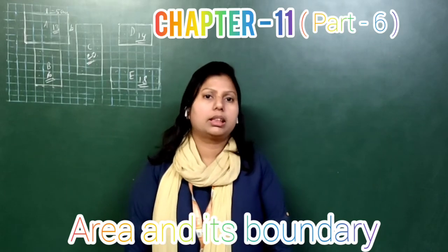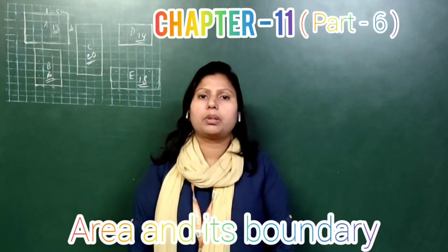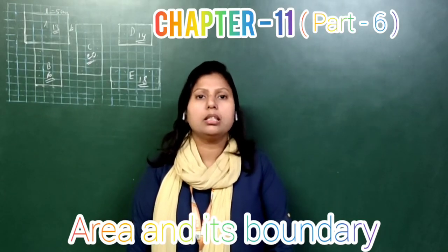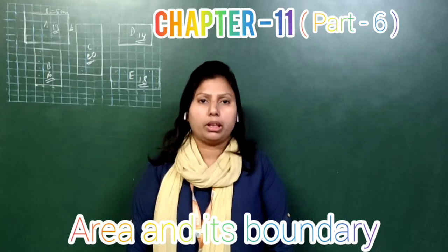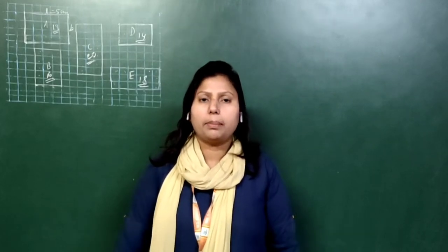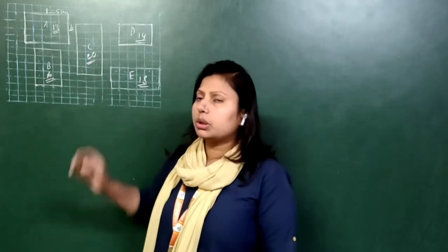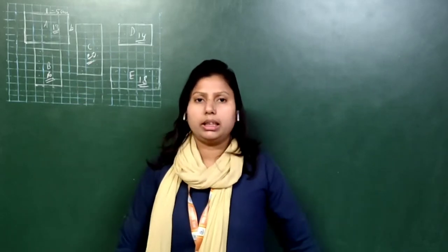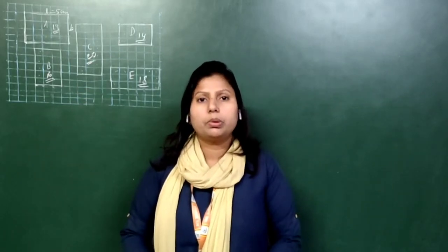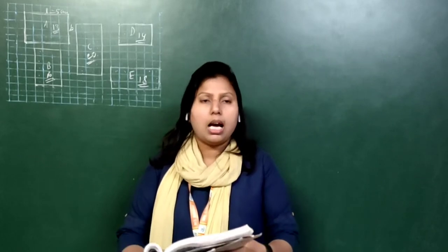Hello everyone. This is our 6th session of Chapter 11: Area and Its Boundary. Here we will learn how to find the perimeter of a given shape on the square sheet. It's from the workbook, page number 152, question number 7.